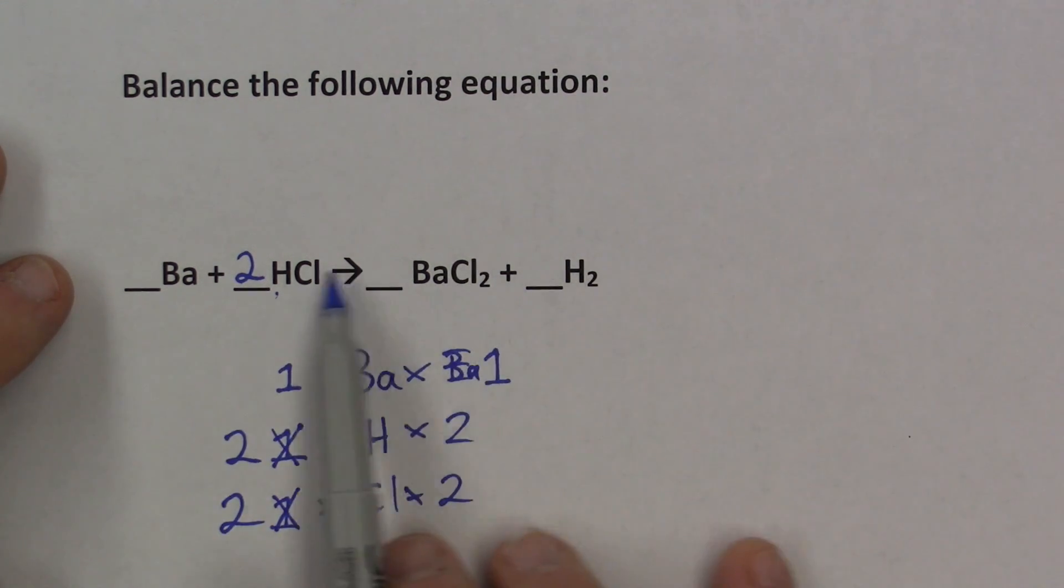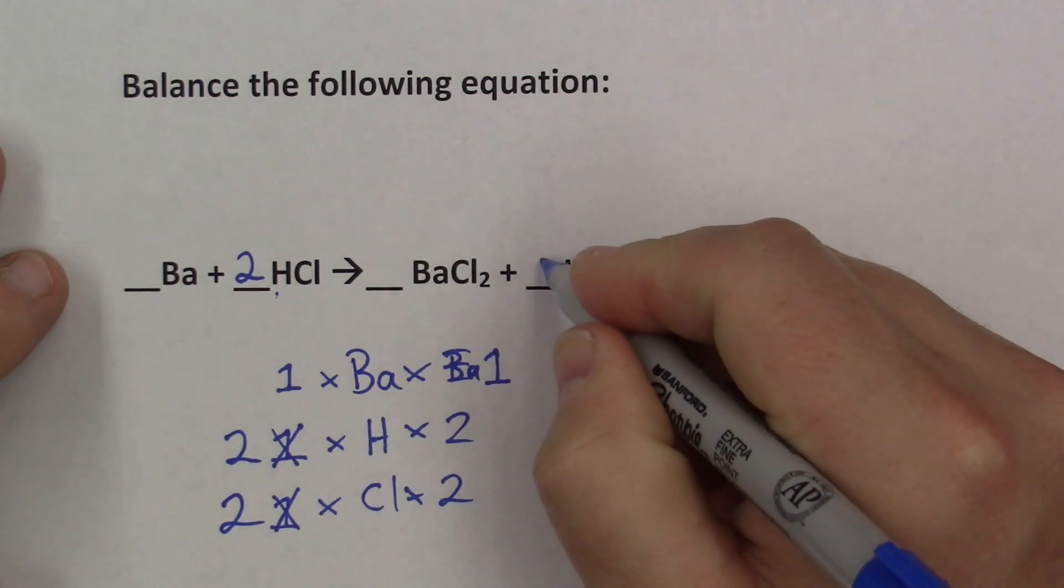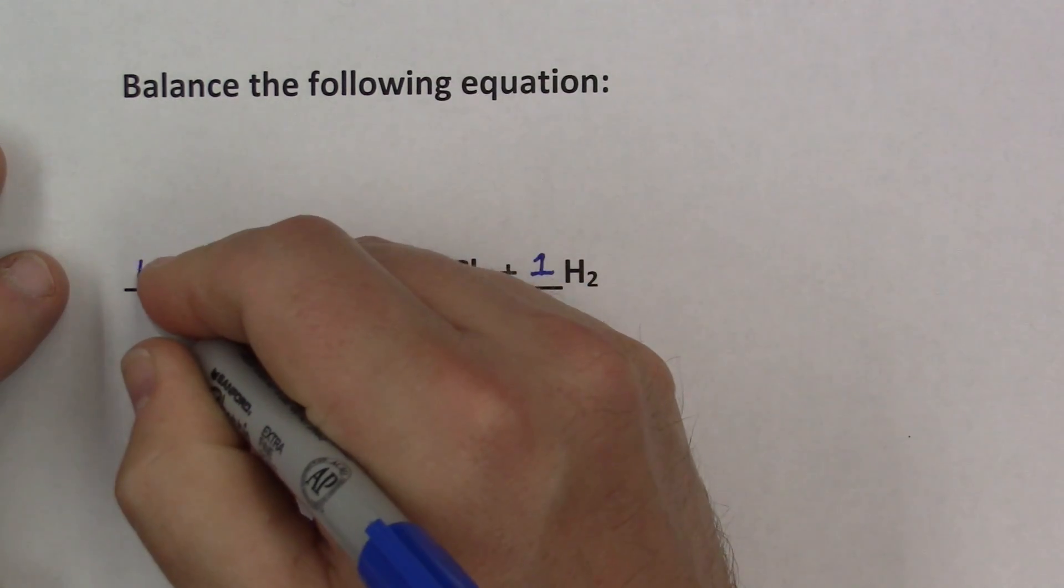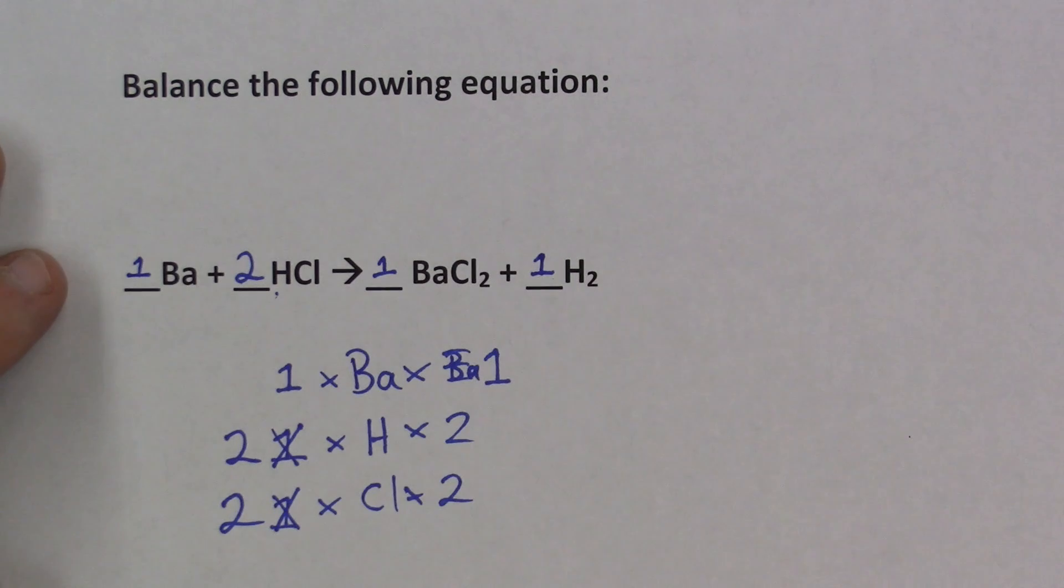Now, in these spots, if nothing's written, it's assumed to be 1. But if you want, you can just go ahead and write the number 1 in there, if you choose to. If you don't write it, I'll assume you mean it to be a 1. If you do write in a 1, that's fine. So that's balancing equations. That's how you should approach it, and that's the systematic method to use.